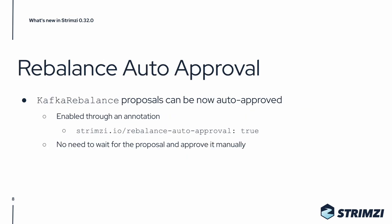We also keep improving our support for Cruise Control and for rebalancing of the Kafka clusters. In this release, we add support for auto-approval of the Kafka Rebalance proposals. If you create your Kafka Rebalance custom resource with the annotation strimzi.io/rebalance auto-approval set to true, the proposal created by Cruise Control will be automatically approved and executed. You do not need to approve it manually anymore.